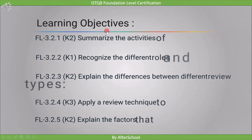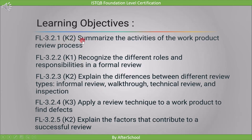The learning objectives for the review process topic are: summarize the activities of the work product review process; recognize the different roles and responsibilities in a formal review; explain the differences between review types — informal review, walkthrough, technical review, and inspection; apply a review technique to a work product to find defects (marked K3, meaning application-based questions); and explain the factors that contribute to a successful review.